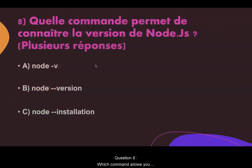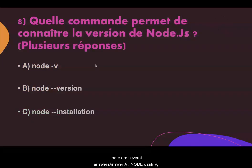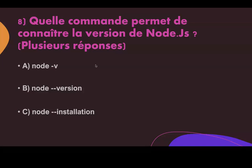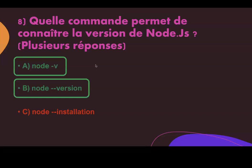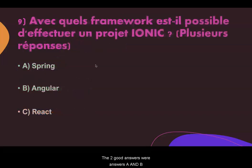Question eight. Which command allows you to know the version of Nuxt.js? There are several answers. Answer A: nuxt -V. Answer B: nuxt --version. Answer C: nuxt --installation. The two correct answers are A and B.